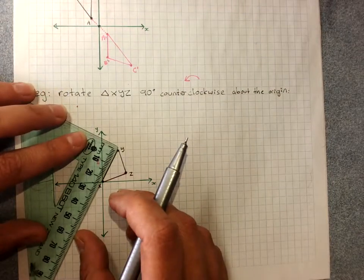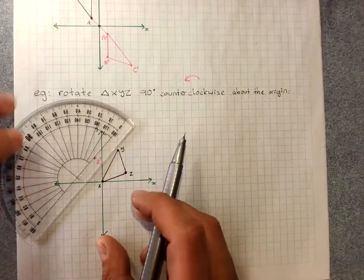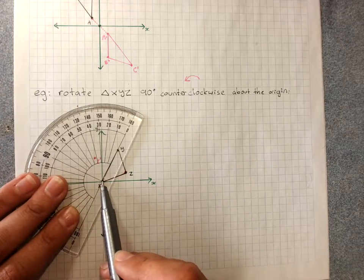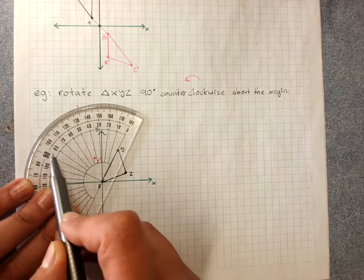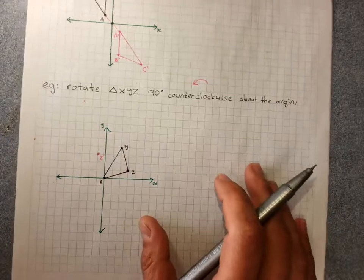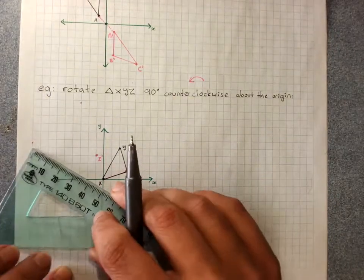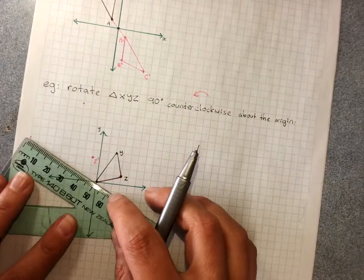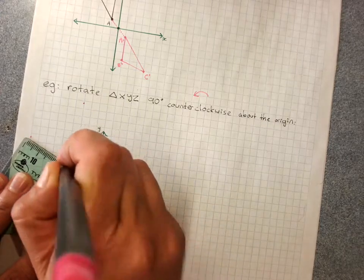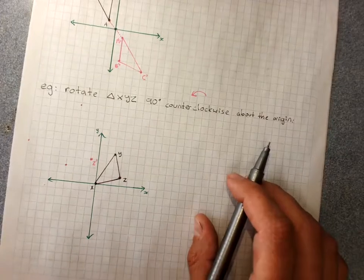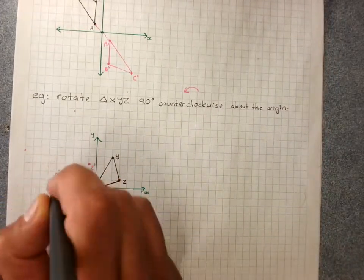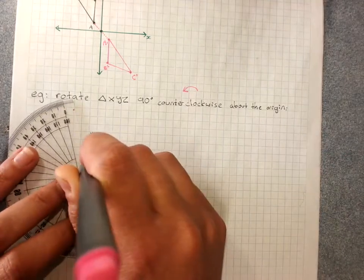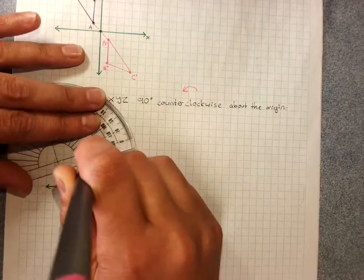Y is 2.3 centimetres. 90 degrees — protractor with the point there, cross on the rotation point in line with Y, 90 degrees around. That same distance for Y: 2.3 centimetres. It'll be on a grid line if it was on a grid line. And X stays where it is. You can see that we have rotated that shape.